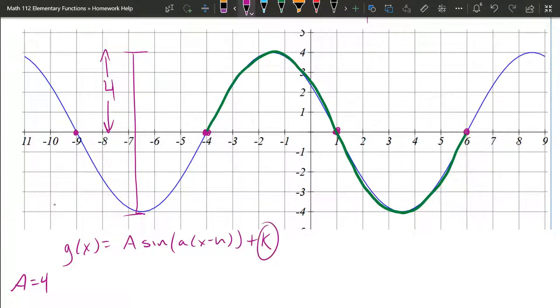Okay how about this shift up and down? Well, I draw a center line to this between the top and the bottom. The center line is the x-axis so it's not shifted up or down at all. So k equals zero.